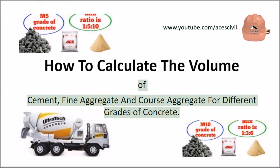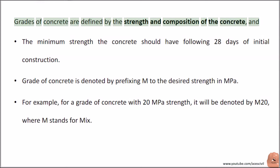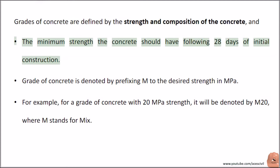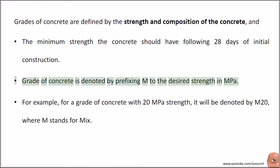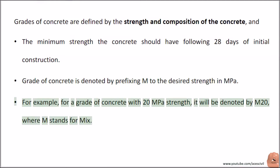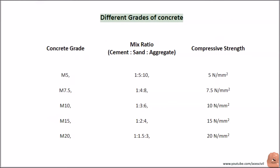Grades of concrete are defined by the strength and composition of the concrete — specifically the minimum strength the concrete should have following 28 days of initial construction. Grade of concrete is denoted by prefixing M to the desired strength in MPa. For example, for a grade of concrete with 20 MPa strength, it will be denoted by M20, where M stands for mix.